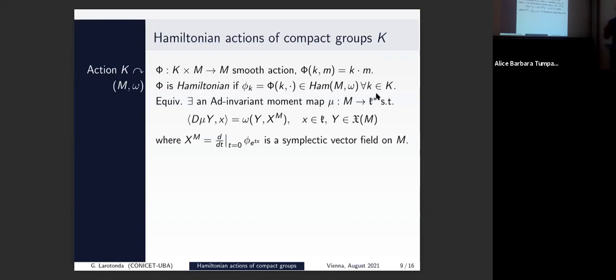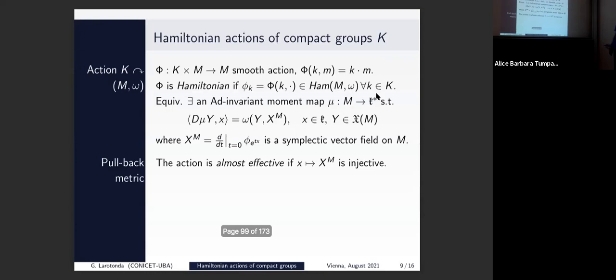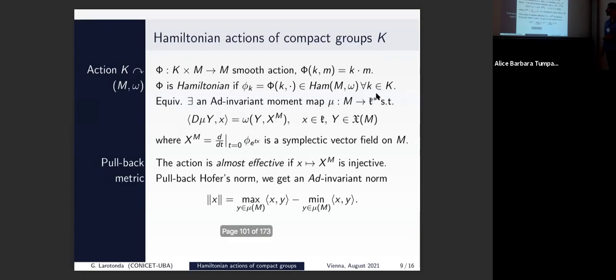The hypothesis we are asking — which maybe can be relaxed — is that the action is almost effective, meaning the kernel at the Lie algebra level is trivial. So this map is injective, and using that injectivity we can pull back the Hofer norm. And if you do that, what you have is exactly the problem where the norm is the norm of the momentum map image. I think this is all kind of trivial but also very nice how the pieces fit together.